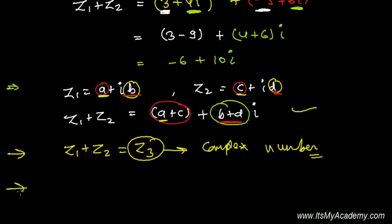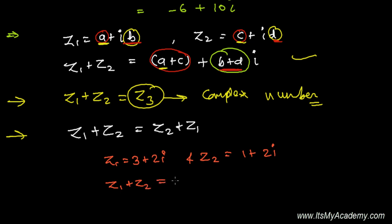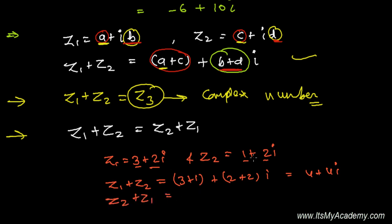Addition of two complex numbers follows the commutative law, meaning Z1 plus Z2 is exactly equal to Z2 plus Z1. For example, let Z1 = 3 plus 2i and Z2 = 1 plus 2i. Then Z1 plus Z2 = (3+1) plus (2+2)i = 4 plus 4i. And Z2 plus Z1 = (1+3) plus (2+2)i = 4 plus 4i. Both are equal, so it follows the commutative law.